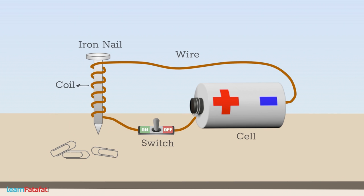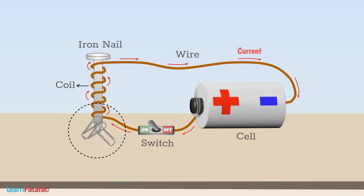Now, turn on the switch so that current flows. As soon as the switch is turned on, the iron nail attracts the pins. As a result, the pins stick to the end of the iron nail.